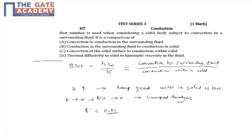Because that means K is significantly high. Conduction within the solid - K, the conductivity, dictates conduction in the solid. That means K is very high and you are reaching a stage of lumped heat transfer. So that is the meaning. C is the answer for this.